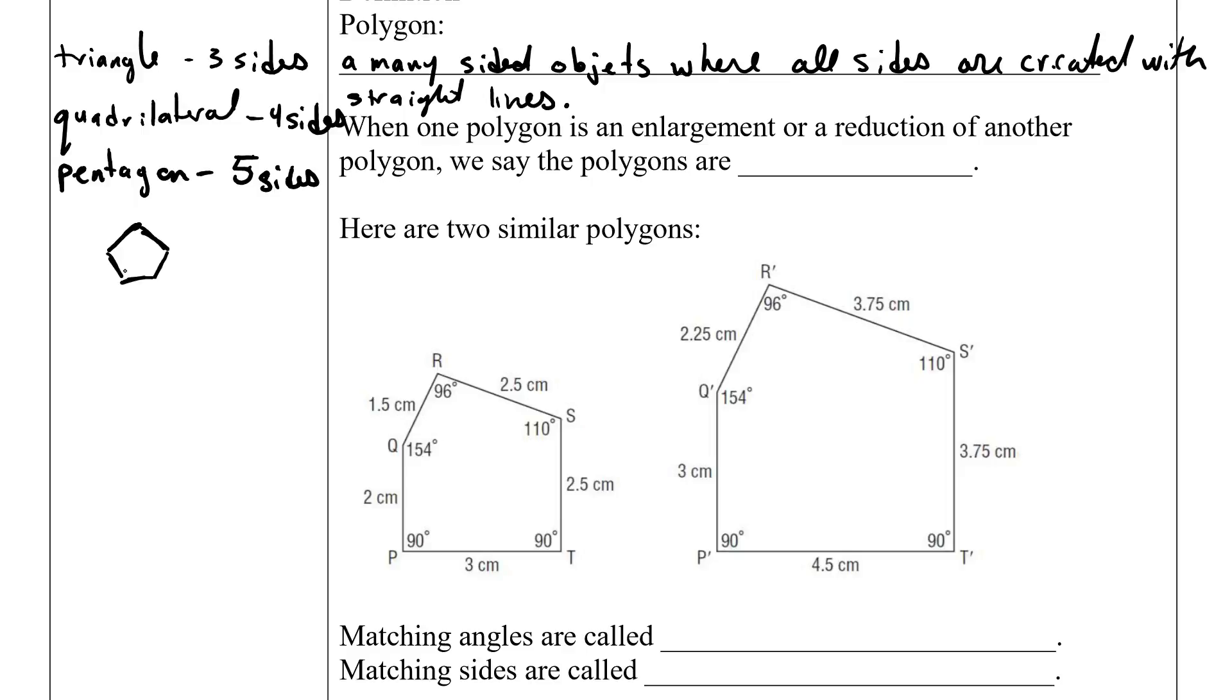And there are, there's a specific kind of thing called regular polygons. Regular polygons are where all sides are equal and all internal angles are equal.